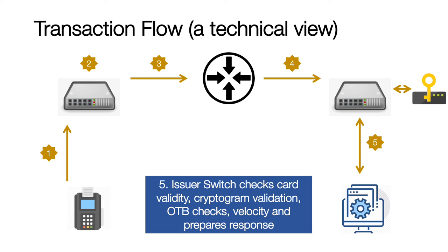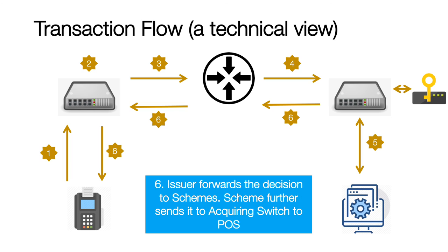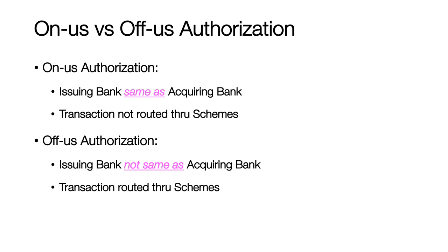The issuer switch validates the cryptogram with the help of HSMs. It works with the issuer's CMS to check if the customer has enough limit to perform the transaction and performs velocity checks. The issuer switch itself is capable of doing what an issuer's CMS generally does, but sometimes it works closely with the issuer's CMS to perform the transaction decision. Finally, the issuer forwards the decision to the scheme, which forwards it to the acquiring switch, which further forwards it to the POS terminal.